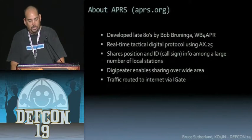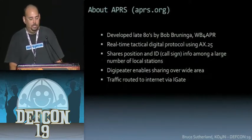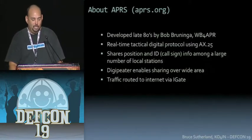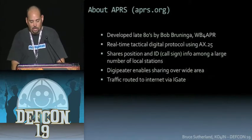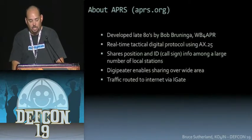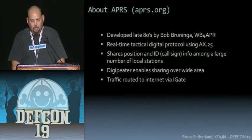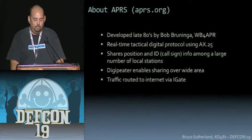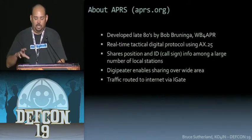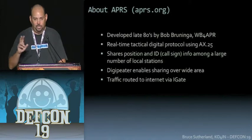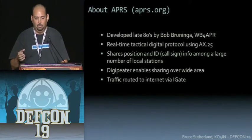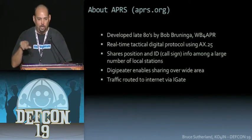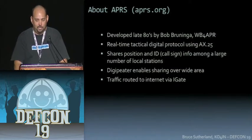A little bit about APRS: it was developed in the late 80s by Bob Bruninga, who works at the Naval Academy in Annapolis, Maryland. It was first developed on an Apple II computer and later on an IBM PC. This protocol is designed to share your GPS position and call sign among a large number of local stations. That's useful for events like a marathon, where you'd have water stations, medical stations, and various organizers all on the network — and with the appropriate equipment you could plot all of them on a map and see them moving around.